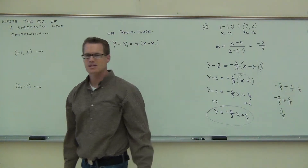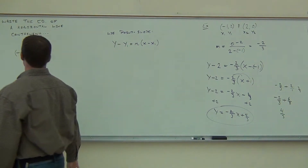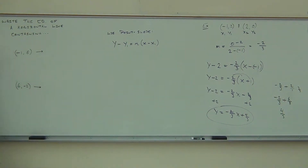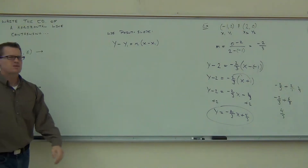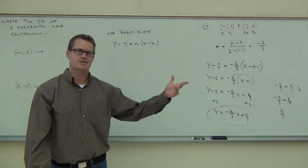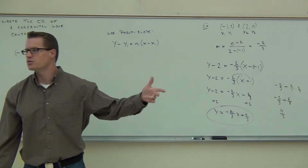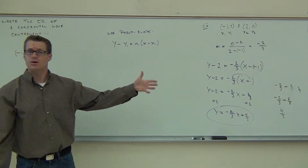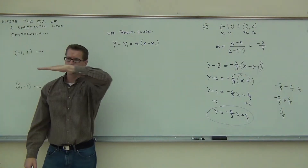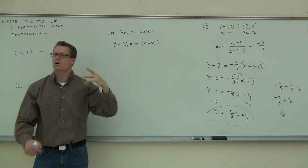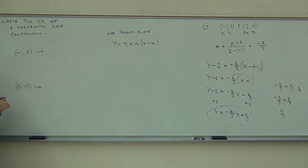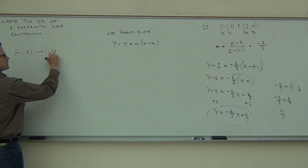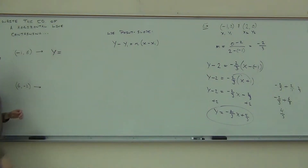The last thing — it would take me 10 seconds to talk about this. If you were asked to write the equation of a horizontal line, horizontal line means the slope is 0. Horizontal means y equals something — it's always the constant of y.